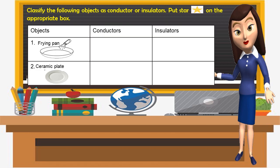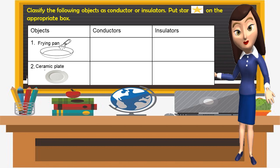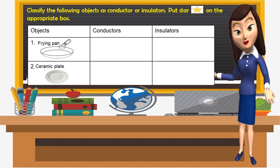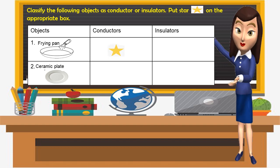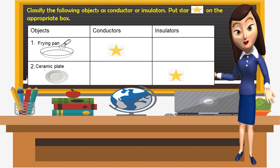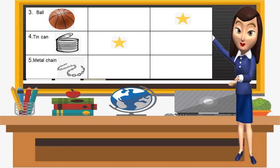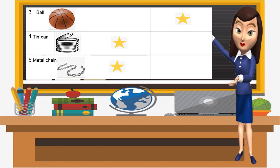I have here an activity. I want you to classify the following objects as conductor or insulator — put a star on the appropriate box. Frying pan: a conductor. Ceramic plate: an insulator. Ball: insulator. Tin can: a conductor. Metal chain is a conductor. Glass — very good.